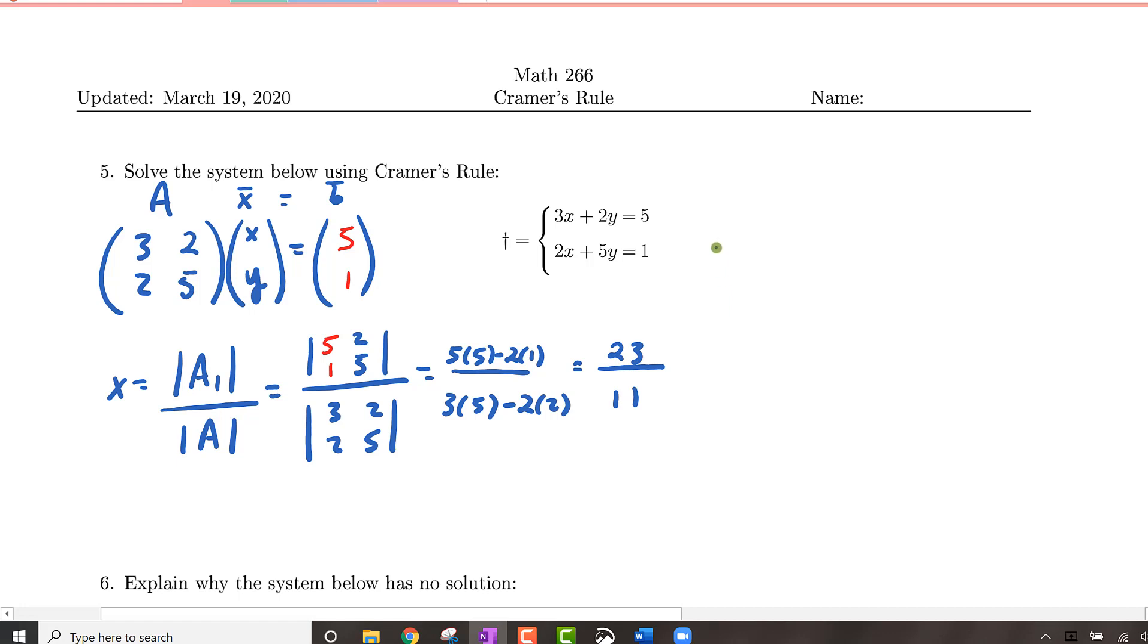So then for the second unknown variable y, Cramer's rule says we can represent this as the determinant of A2 all over the determinant of A which is the determinant and in this case we take our coefficient matrix again leaving all columns the same except for in this case we're going to replace the second column with 5, 1. The determinant in the denominator still computes to be 11 and in the numerator we get 3 minus 10 or we get negative 7.